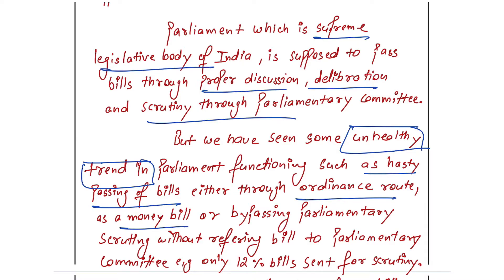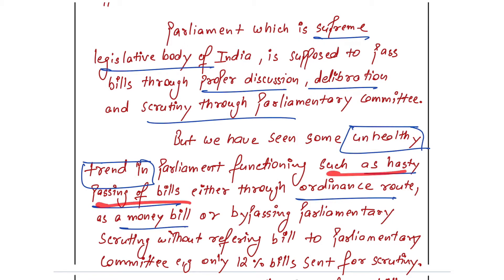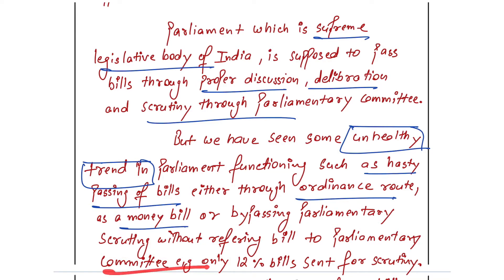The government has to refer bills to parliamentary committees. Committees can be of two types: standing committees and ad hoc committees. Ad hoc committees include the joint committee — involving both houses — and the select committee, which is from a single house (either Lok Sabha or Rajya Sabha). You can refer to either. After explaining these, use linking lines to connect one paragraph to the next. We have seen some unhealthy trends in parliament's functioning — such as the hasty passing of bills, either through the ordinance route or as a money bill, bypassing parliamentary scrutiny without referring bills to parliamentary committees.